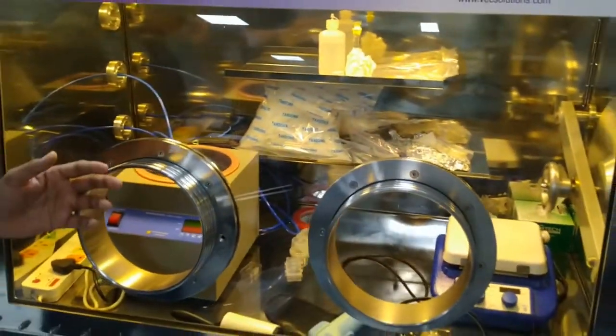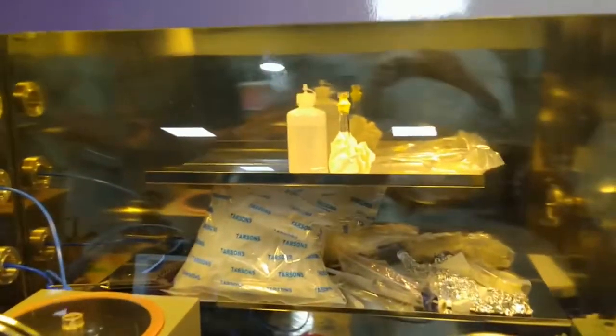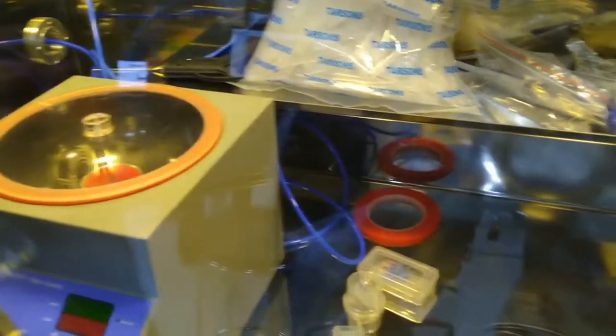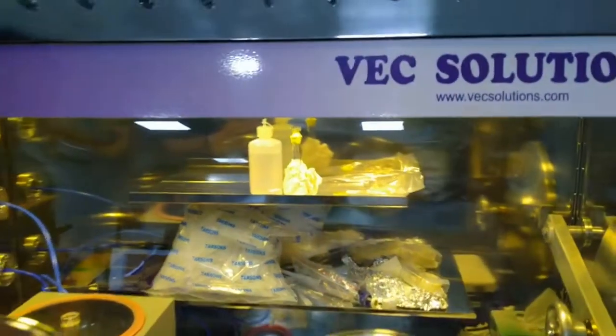This is the wet bench area inside the glove box to process devices and have space for tools like spin coater, hot plate, chemicals and related processes. Whole device processing can be done inside the interconnected glove box seamlessly.